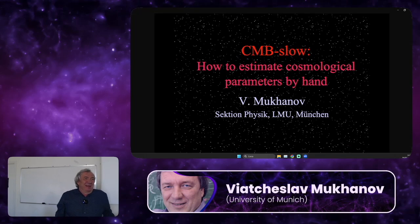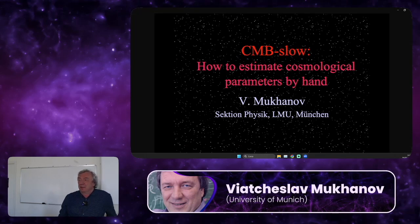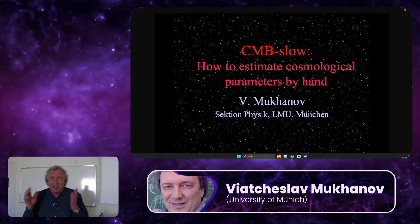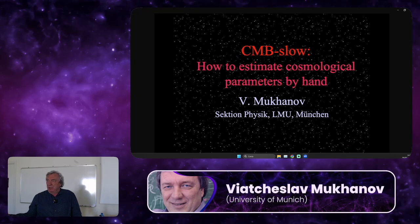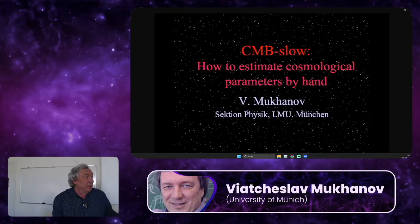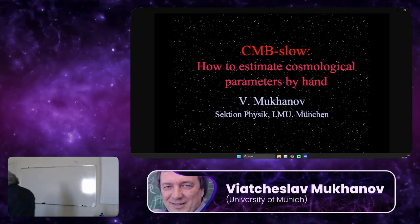The problem was the title of the paper — this title belongs not to me, because there was a computer code called CMB-fast. I spent three months, like a detective, trying to find out how to fix the problem, because we could not reproduce the results. I called Steve Weinberg and asked how he managed to do it. He told me he didn't manage — his student wanted to please him, and was calculating the computer curve for one set of parameters and comparing it with his theoretical curve with a completely different set of parameters.